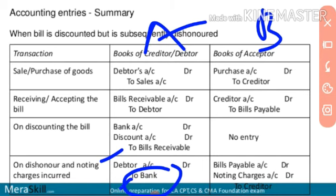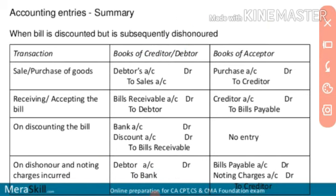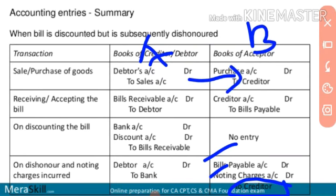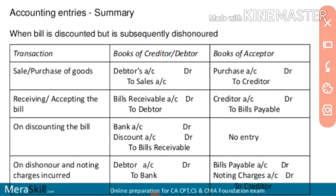In the books of B, on dishonour when the bill was discounted: Bills Payable account debit and Noting Charges account debit, to Creditor account credit. The creditor in B's books is Mr. A, because B had purchased from A. So A is the creditor and B is the debtor in this transaction.